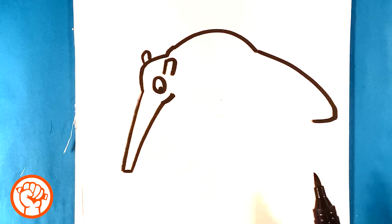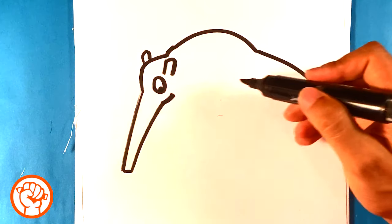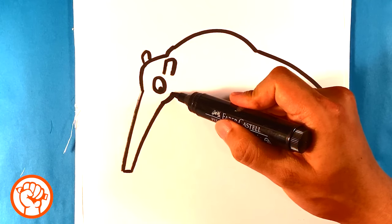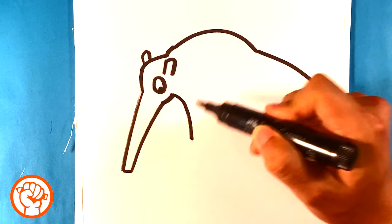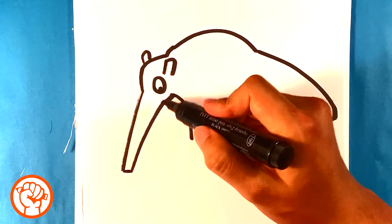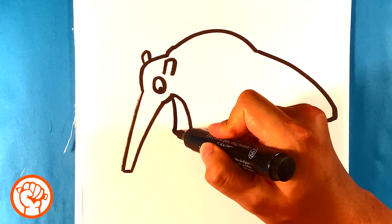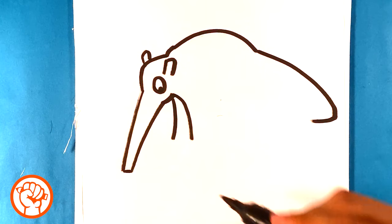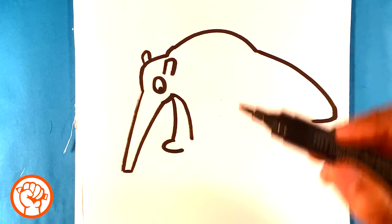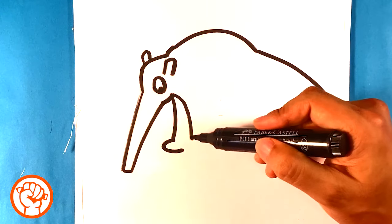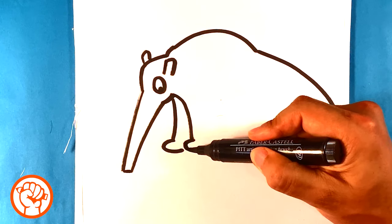So we're trying not to go off the page here. Then we're gonna go down here for his front legs—front leg there, front leg here. I'm gonna go down here, a little round here for his paw, and another round here for his paw.